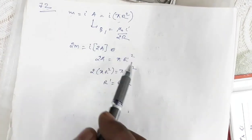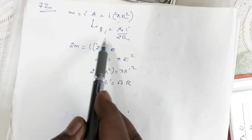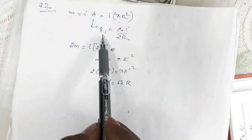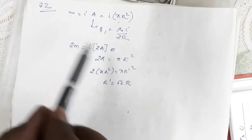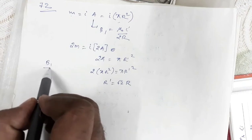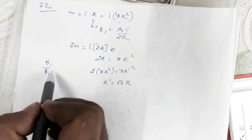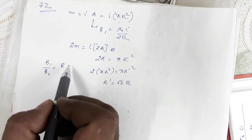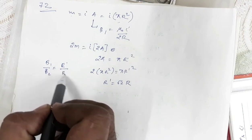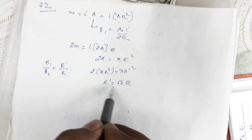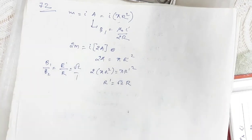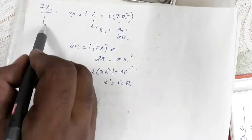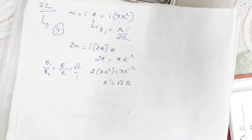Keeping current constant, the magnetic field is inversely proportional to the radius. Therefore, b1/b2 = r'/r = √2/1 = √2. The correct option for question number 72 is number 4.